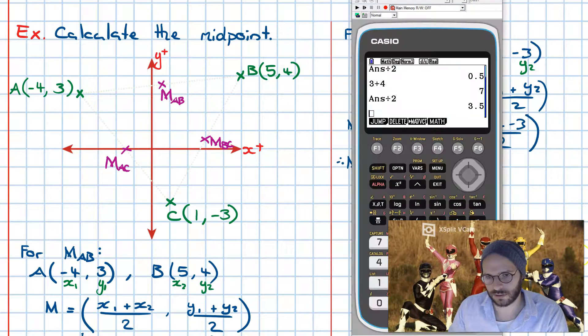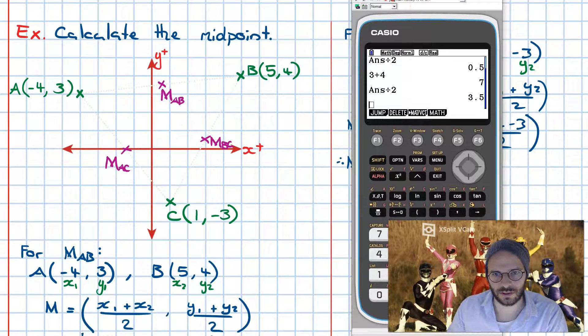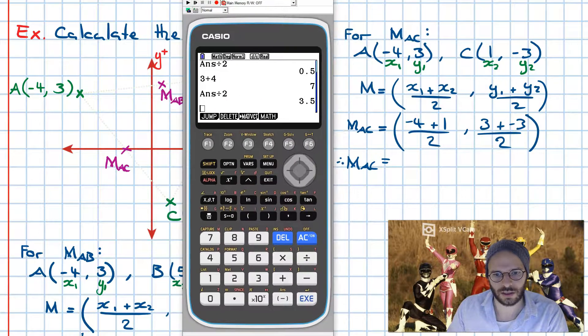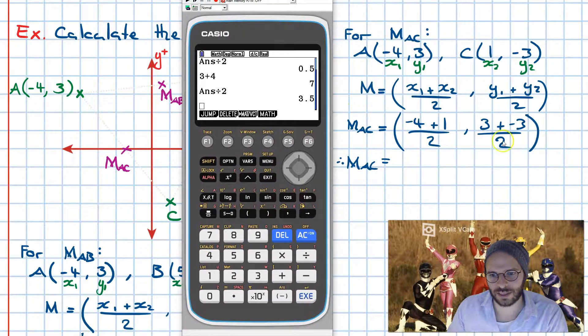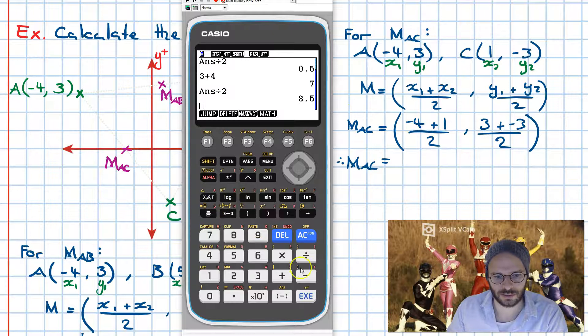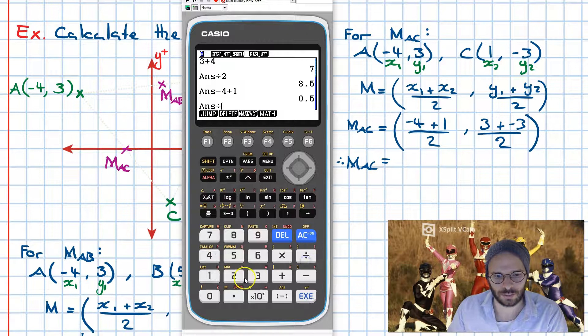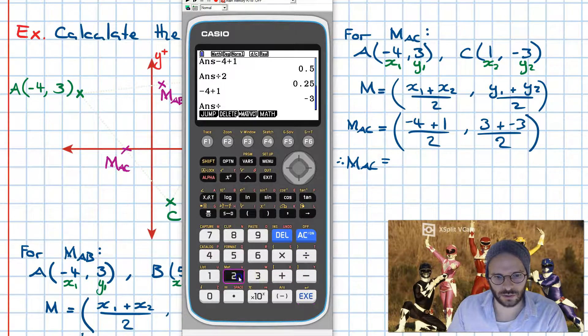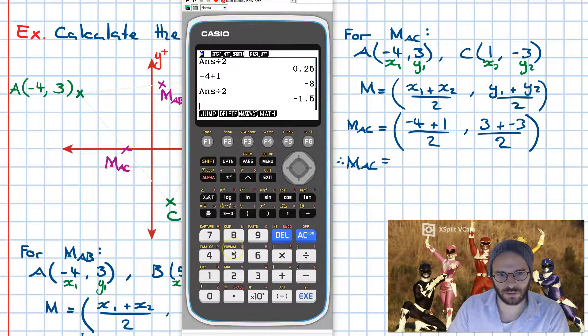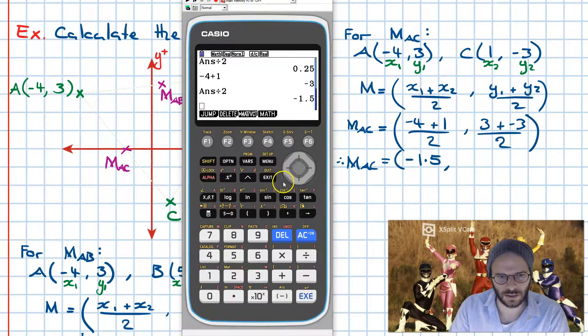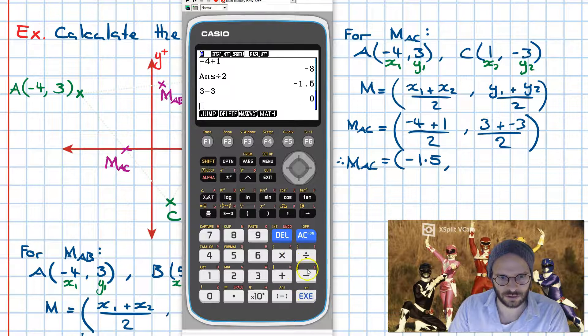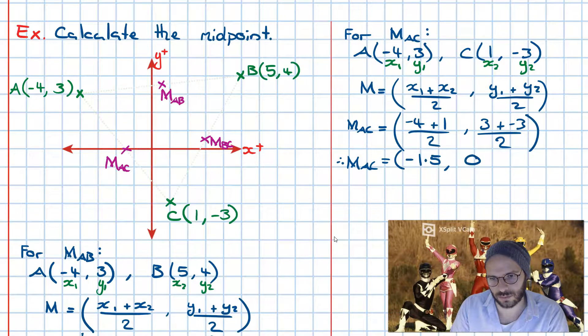Then going for the calculator. Once again, I can easily do this in my head; however, I don't want to make mistakes just misreading numbers, so I'll just put them in like this. So we go minus 4 plus 1 gives us minus 3 divided by 2, that gives us minus 1.5. Then we're going to go 3 minus 3 gives us 0, and then the answer is going to be 0.